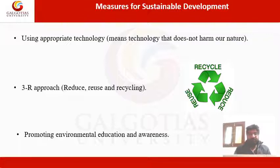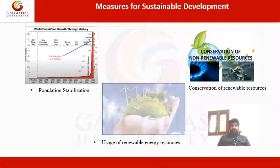Recycling means converting waste materials into raw products. The last measure is promoting environmental education and awareness. Another measure for sustainable development is population stabilization — that means controlling the population explosion. As we can see from this graph, after 1980 there is a sudden hike in population growth, which puts a lot of burden on natural resources, so population stabilization is needed.